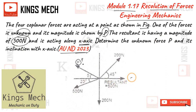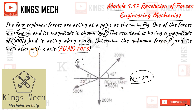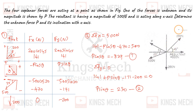Since the resultant is along the x-axis, that means F of x equals 500 N and F of y equals 0. Now, looking at the diagram, we connect the unknown force P and identify its angle theta with the x-axis.